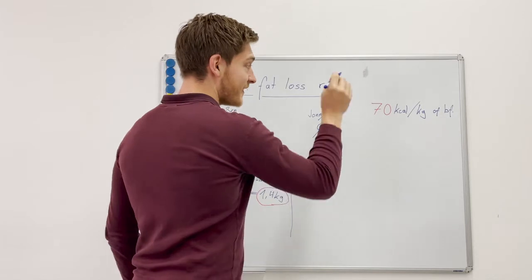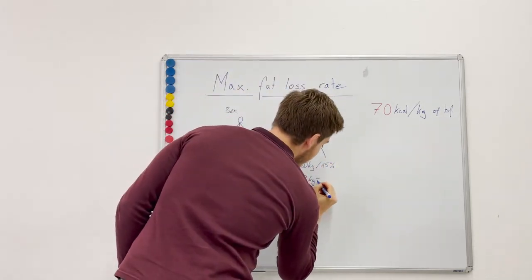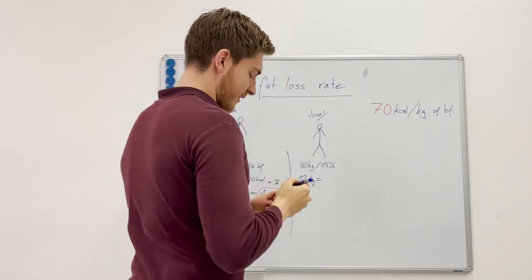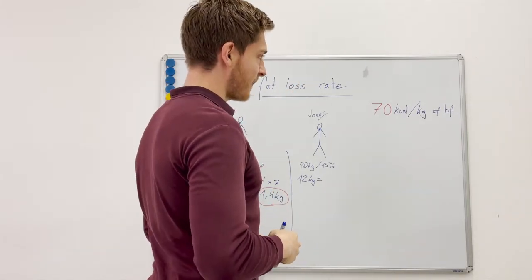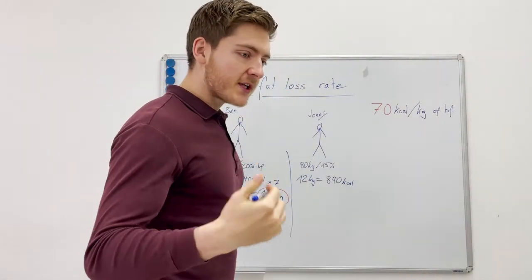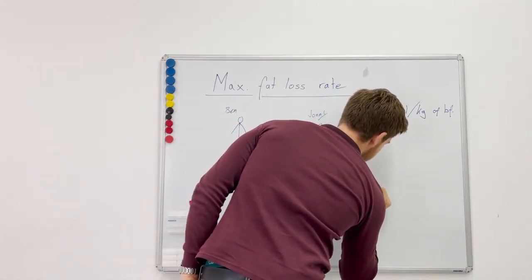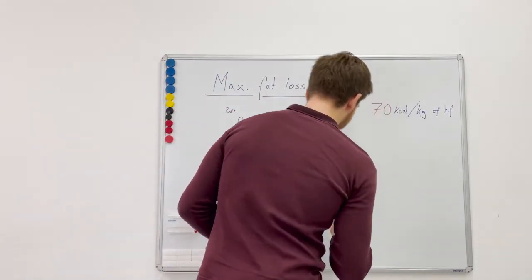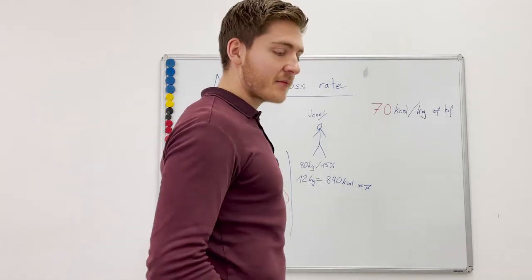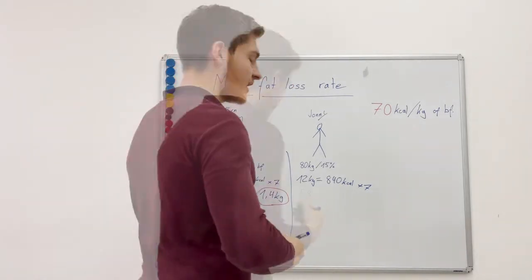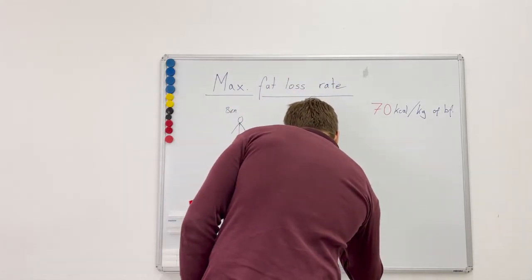Now with that number we know that he can go into a deficit: 12 kilograms times 70 equals 840 calories. And of course also this times seven, so we know per week—this is per day—and then times seven because the week has seven days.